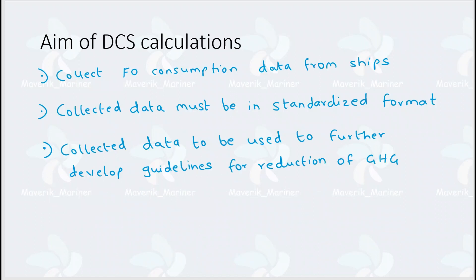What is the aim of DCS data collection? The aim of DCS is to collect fuel consumption data from ships. IMO will use this data to develop and improve their guidelines for further reduction of GHGs.